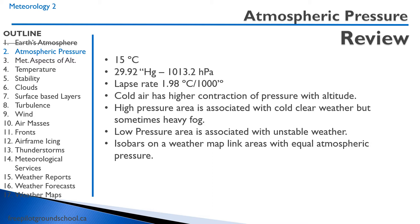Cold air has a higher contraction of pressure with altitude than warm air. A high pressure area is associated with cold, clear weather, but sometimes heavy fog. A low pressure area is associated with unstable weather. Isobars on a weather map link areas with equal atmospheric pressure.